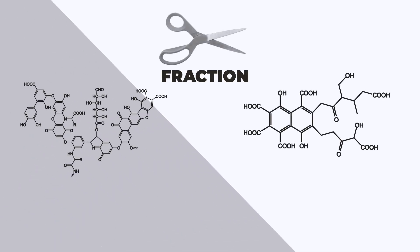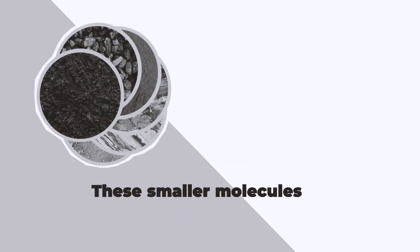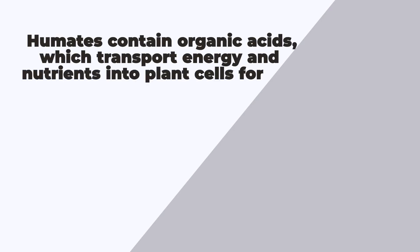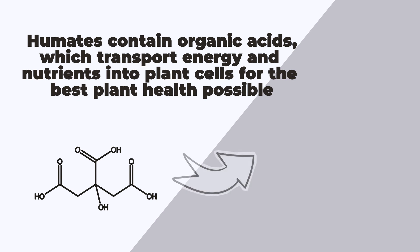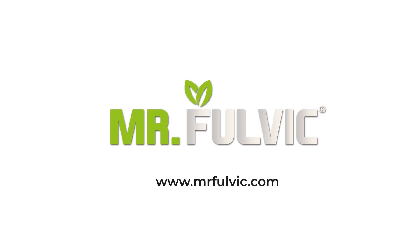As humic acid condenses, its molecules become smaller. These smaller molecules are the fulvic portion of a humate substance. Humates contain organic acids, which transport energy and nutrients into plant cells for the best plant health possible. We hope you enjoyed this video. Contact MrFulvic.com to learn more.